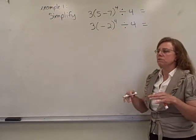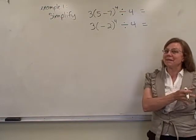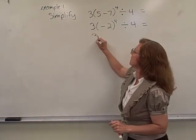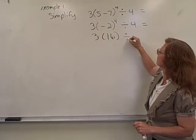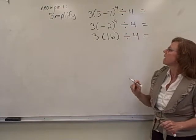negative 2 is the base of the exponent of 4, so we need to simplify negative 2 to the fourth, which of course means negative 2 times negative 2 times negative 2 times negative 2, and so we're going to get a positive 16, and then we still need to divide by 4.